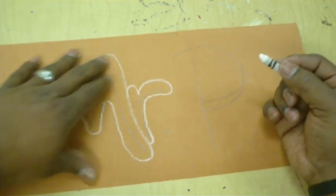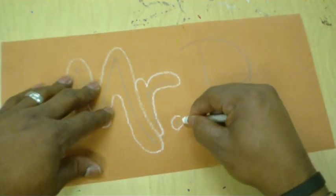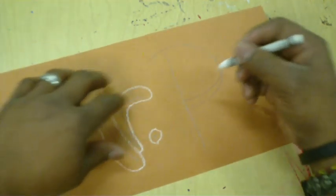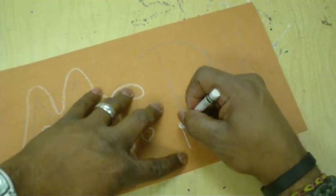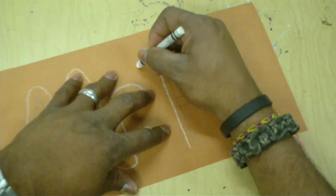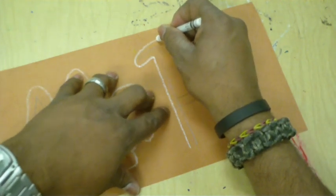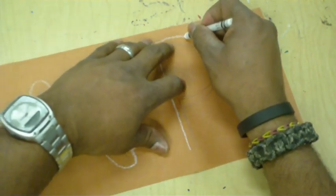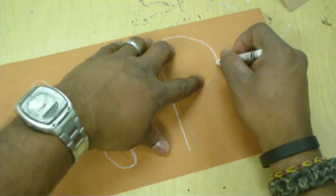Got the M done. Got the R done. Go ahead and put the little dot there. And then we'll go ahead and do the P. After we get this P done, we're going to use oil pastels to color it all in.